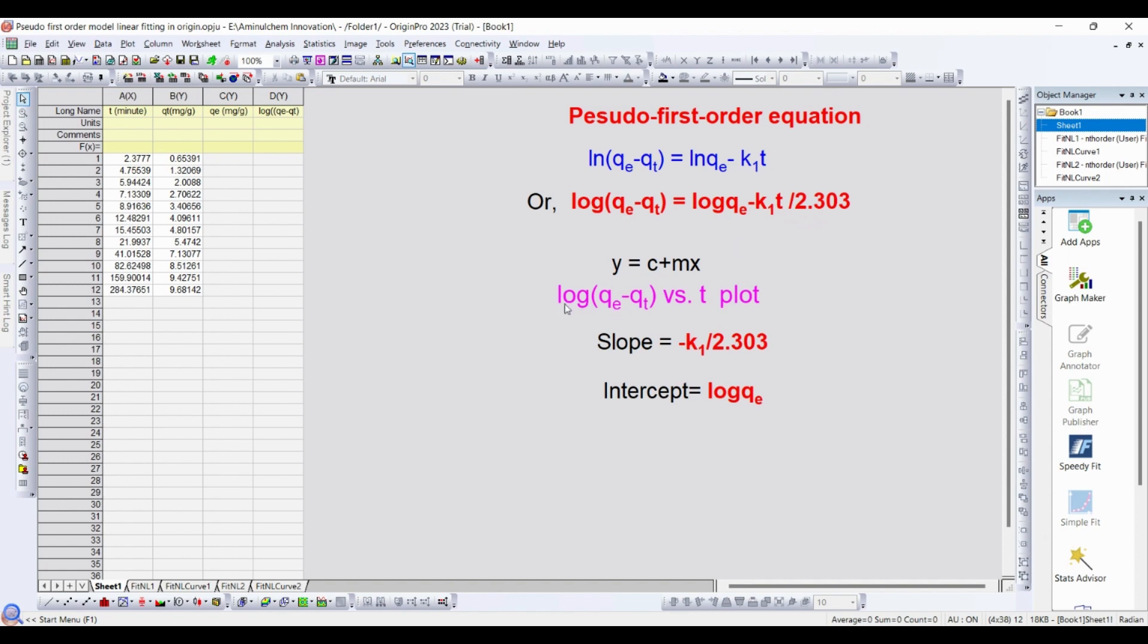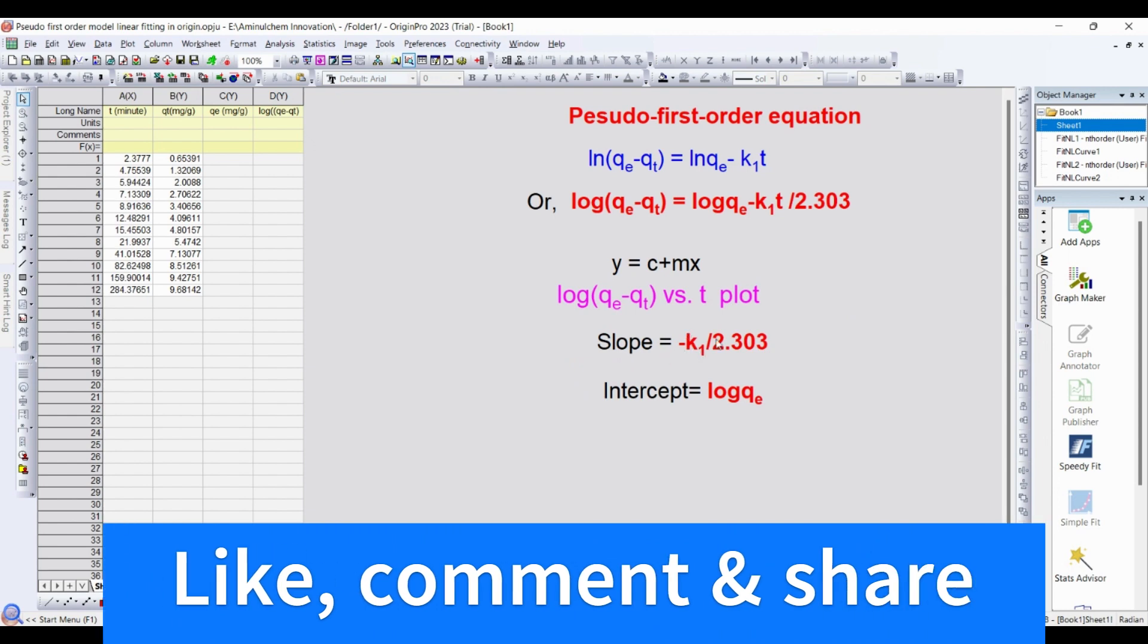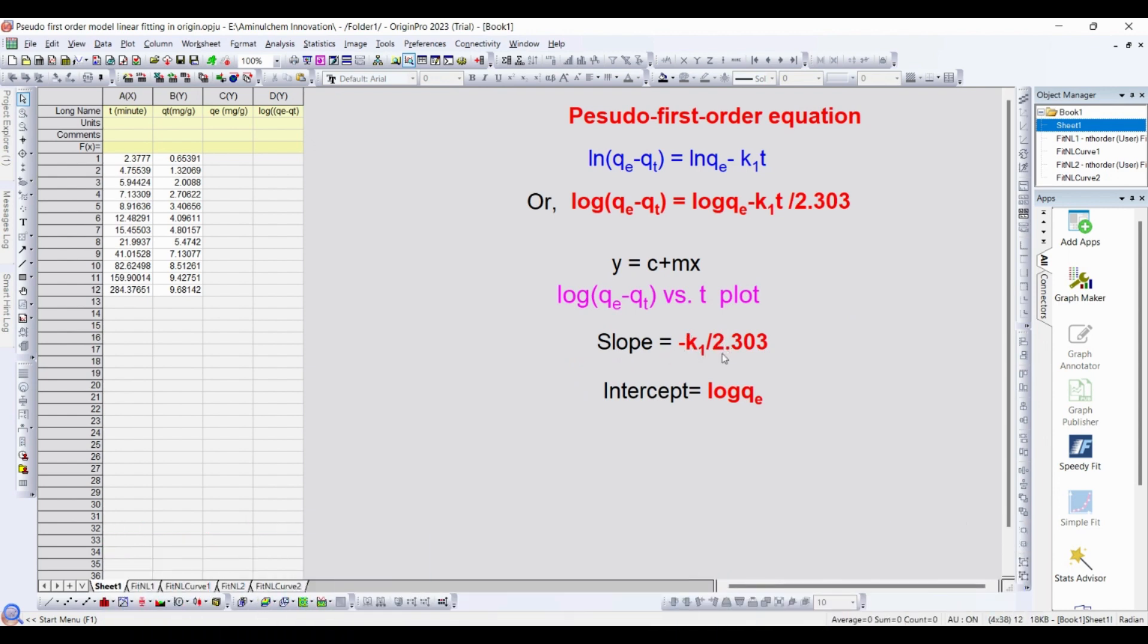If you plot log(qe - qt) versus t, then slope will be -k1 / 2.303. Intercept will be log(qe).